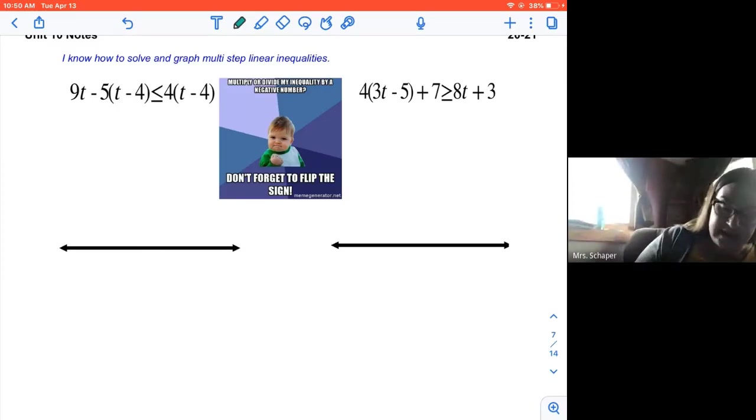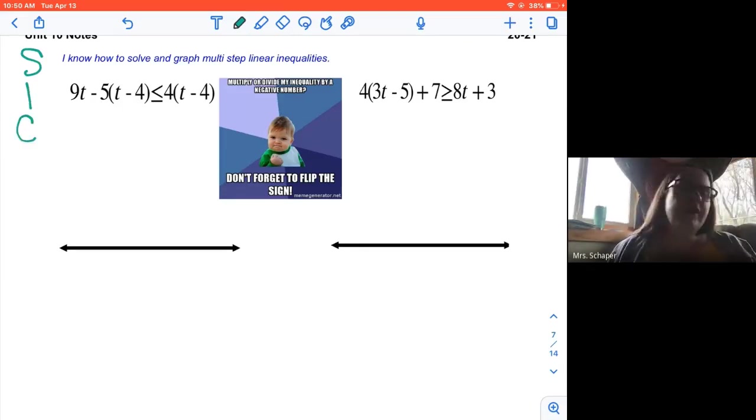So the process is still going to be the same. We're going to simplify, isolate, and check. It's just that now we have variables on two sides.